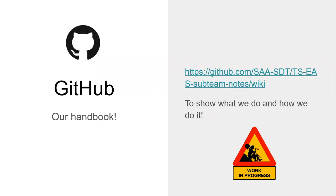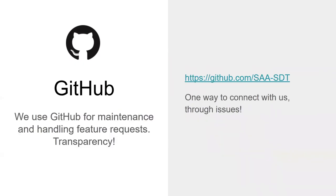A brand new deliverable we are still working to complete is the TS-EAS Handbook. This handbook will serve as documentation about the committee itself, including its history, policies, and workflow instructions. The primary audiences are our committee members, but we are also making this document publicly available. More importantly, we are using GitHub to keep track of feature requests, bug reports, and overall general feedback from the community — one of the fundamental goals of our committee is to conduct our work in a transparent forum that is open and freely available to everyone.